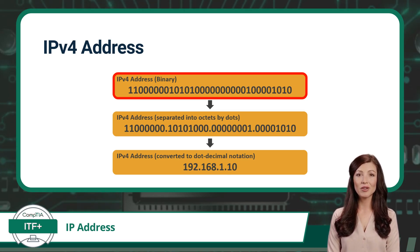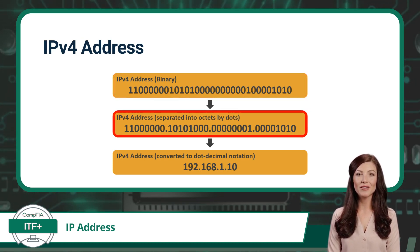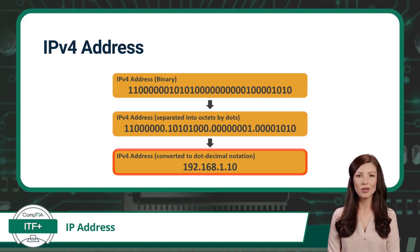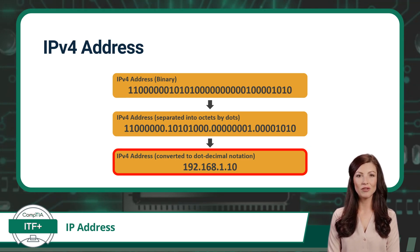To make the 32 binary digit address easier to understand, we group it into different containers separated by dots, creating four sets of eight binary digits, also known as octets. We then convert each octet from binary to its decimal value equivalent, resulting in dot decimal notation that is much easier to read. With this notation, each octet can range from 0 to 255, providing over 4.2 billion numerical combinations.